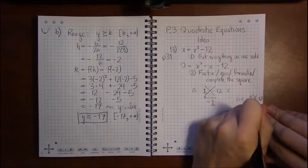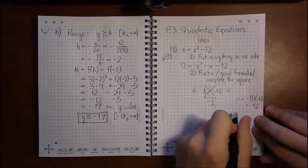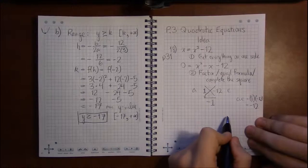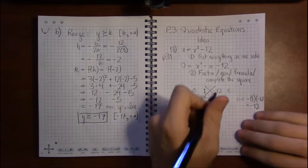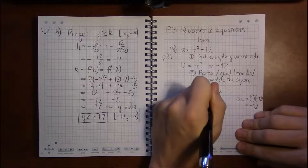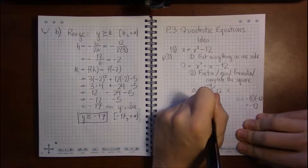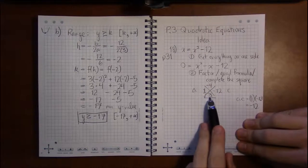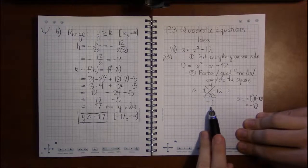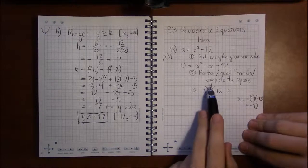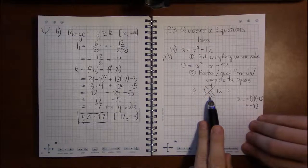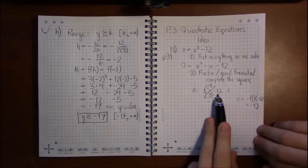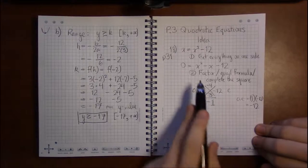So a times c is one times minus 12, which is minus 12. We can only put factors of minus 12 up here. So for example, in this case, the numbers that work are minus 4 and 3, because you see minus 4 plus 3 is minus 1, but minus 4 times 3 is minus 12, just like 1 times minus 12.